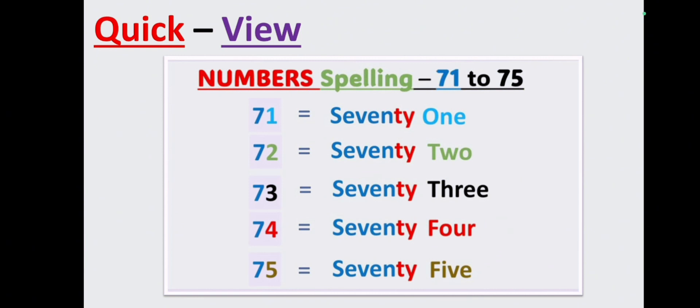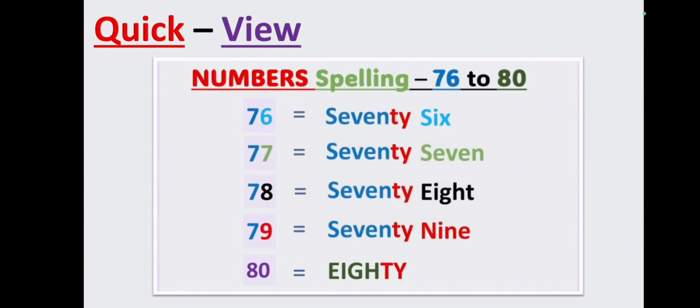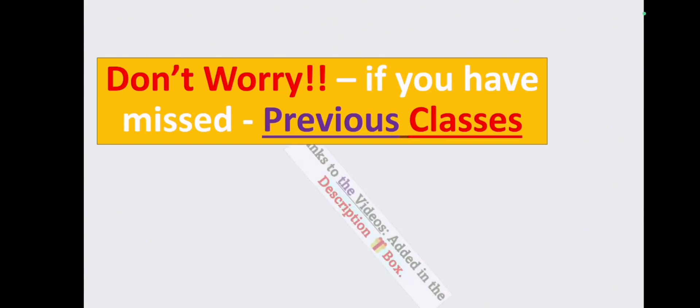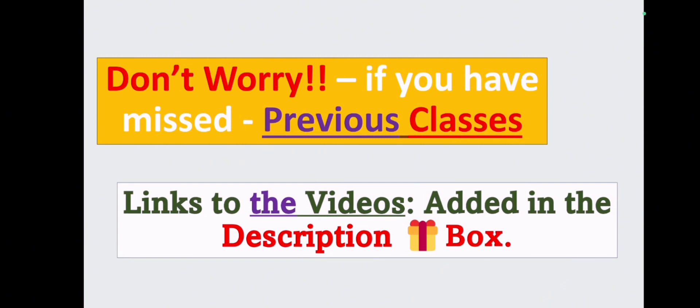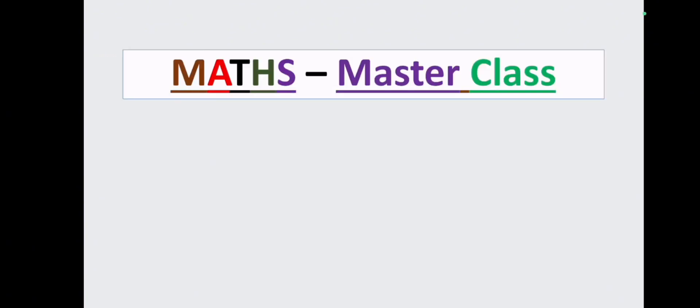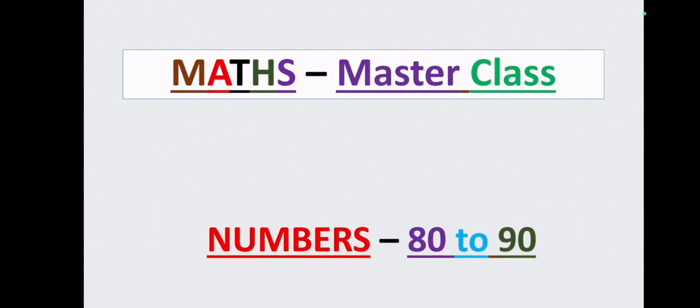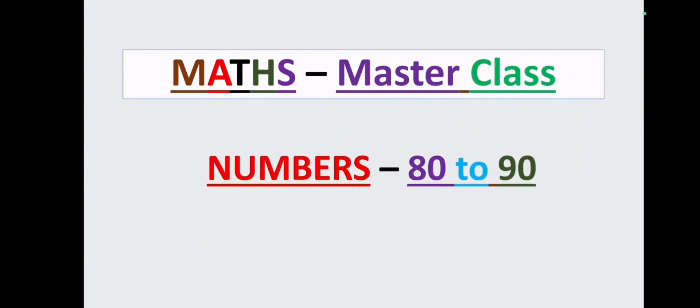Let's have a quick review: in the last class we learned the numbers with spelling 71 to 75, and also the spelling of 76 to 80. Don't worry if you missed any of our classes — links to the videos are added in the description box. In today's Max Master Class we are going to learn numbers 80 to 90. Let's proceed.